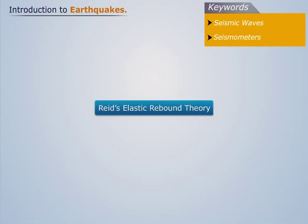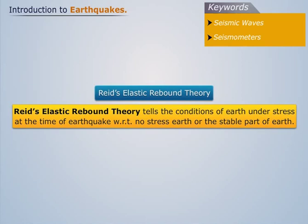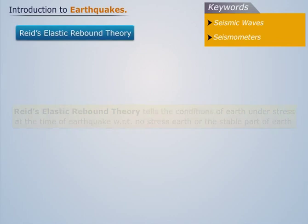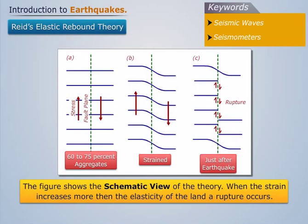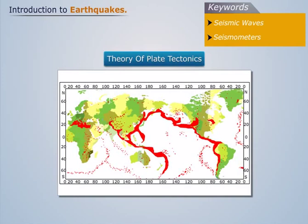Reed's Elastic Rebound Theory explains the conditions of the Earth under stress at the time of an earthquake, compared to a no-stress or stable state of the Earth. The figure shows a schematic view of the theory. When the strain increases beyond the elasticity of the land, a rupture occurs.